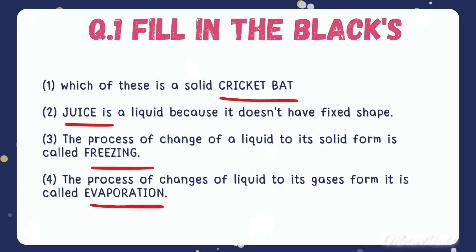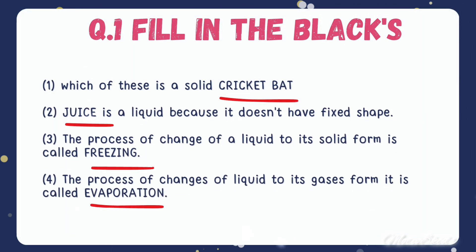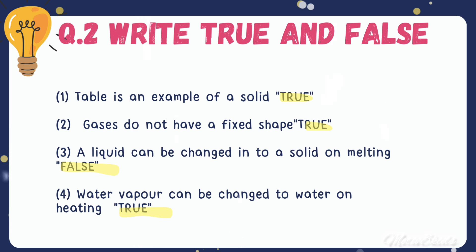Question number one: fill in the blanks. Which of these is a solid? Cricket bat. Juice is a liquid because it does not have a fixed shape. The process of change of a liquid to its solid form is called freezing. The process of change of a liquid to its gaseous form is known as evaporation.